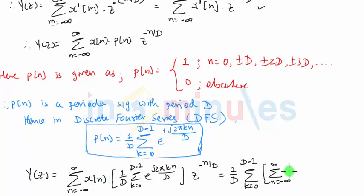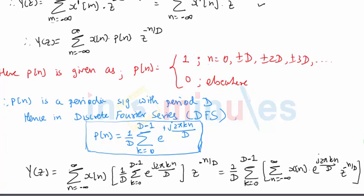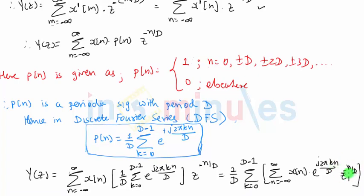So we write summation N equal to minus infinity to plus infinity, and everything which has N in it must be written inside the summation. So that's X of N e raised to J 2 pi K N by D into Z raised to minus N. So almost everything has N inside it. So we have written all those terms inside the second summation. Now I'm going to do a small arrangement of powers here. So please remember this expression as we go to the next step.